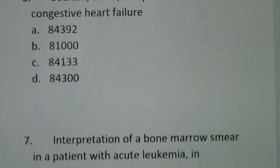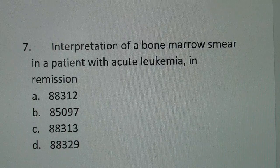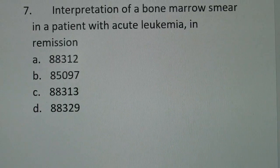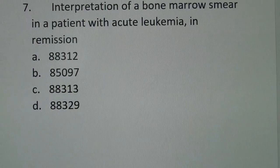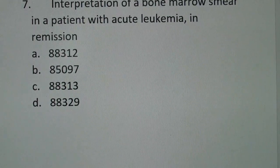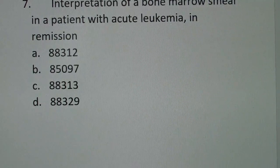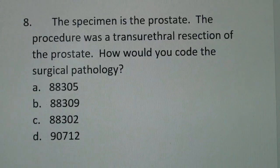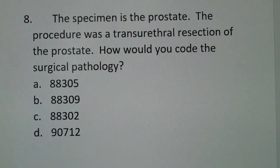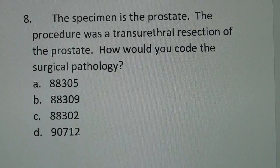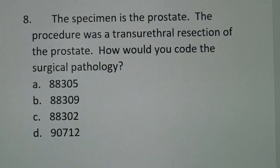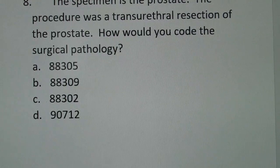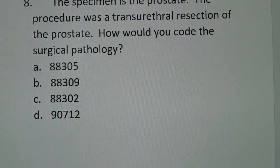Next question: Interpretation of a bone marrow smear in a patient with acute leukemia in remission. Is it A88312, B85097, C88313, or D88329? And one more question: The specimen is the prostate. The procedure was a transurethral resection of the prostate. How would you code the surgical pathology? Is it A88305, B88309, C88302, or D90712?